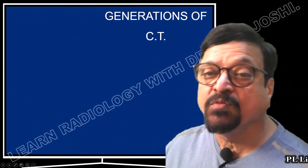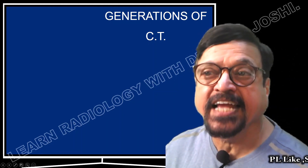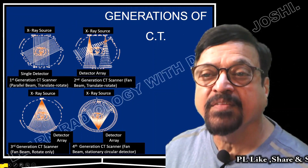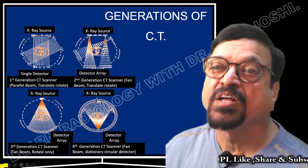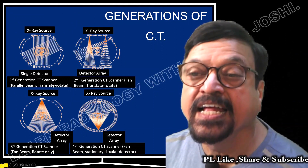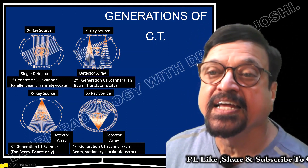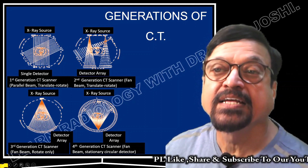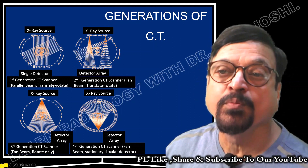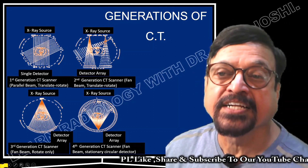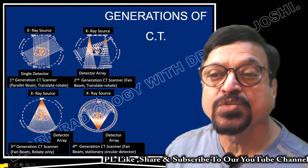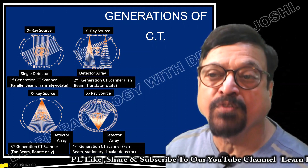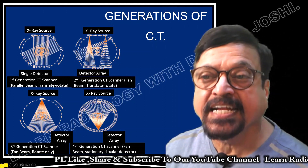To understand the generations of CT scan, we start with the first generation — the single detector. In this there was a parallel beam and the tube was moving. You can see in the diagram the tube is moving and detectors are catching the signals. This was extremely slow; each CT scan of the head was taking more than 45 minutes. Then came the second generation.